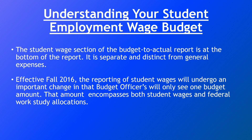To understand your student wage budget, you first need to know where to find it, which depends on whether you have access to it. If you are not aware or cannot access it, connect with your supervisor or budget officer. Not everyone who is a student supervisor will have access to their student employment budgets online — that is a restricted access. If you do have access, you will find this on Inside Goucher in the budget to actual report, on a specific line that says total student wages. Effective fall 2016, reporting of student wages will show only one line for total student wages — no more breakdown by federal work study versus non-federal work study.